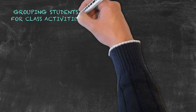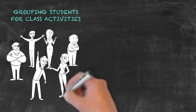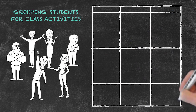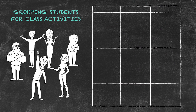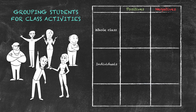Our next consideration is how we actually group our students. There are perhaps three types of grouping arrangements we can consider, and within those we'll look at the potential positives and negatives of those particular arrangements. We could arrange our group as a whole class, students could be working as individuals, and the final arrangement is that of small groups or pair work. For each of these types, what are the potential positives and negatives?